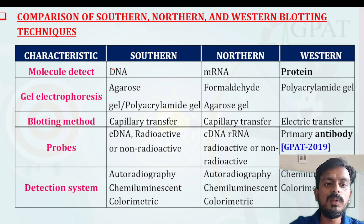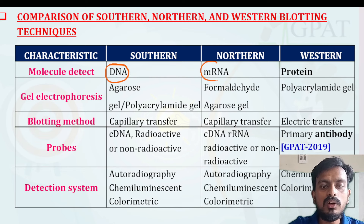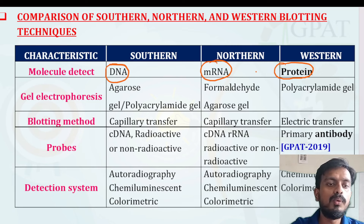Southern blotting is basically for the detection of DNA. Northern blotting is basically for the detection of mRNA. Western blotting is for the detection of protein.